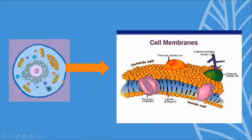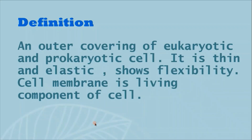The cell wall is a hard outer covering, but the cell membrane and plasma membrane serve as the outer covering in eukaryotic cells. In prokaryotic cells, the cell membrane is also the outermost boundary. The cell membrane is the outer covering of both eukaryotic and prokaryotic cells, which is thin and elastic in nature.